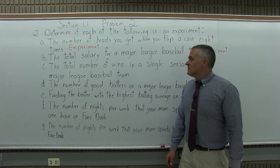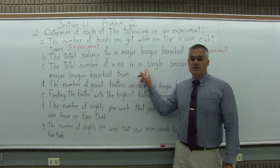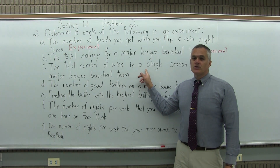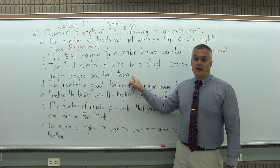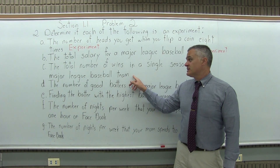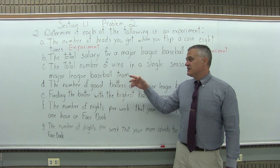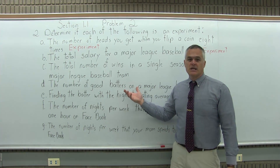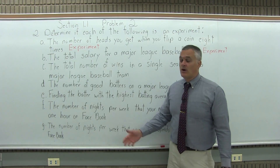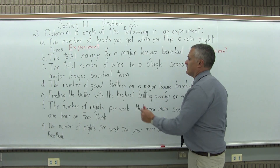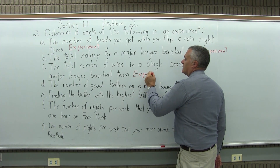Part C: the total number of wins in a single season for a major league baseball team. Also not a matter of opinion in any way. In a regular season you play 162 games. Let's say you win 108 of those games — it's a good season. No opinion involved, no argument. So also an experiment.